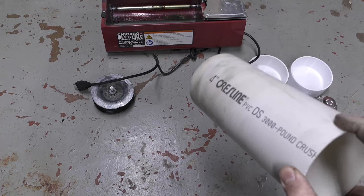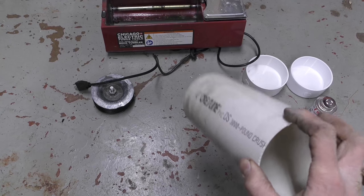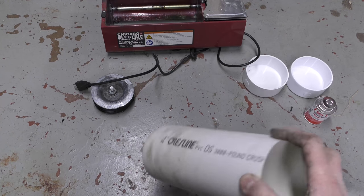Okay, today I'm going to be showing you how to convert the Harbor Freight rock tumbler over to something that you can use to polish metal.